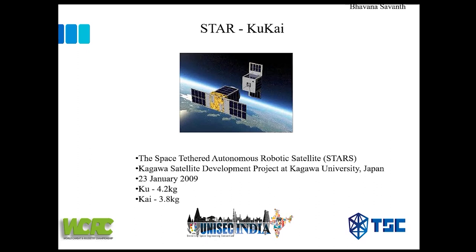STAR — the Space Tethered Autonomous Robotic Satellite — is a Kagawa Satellite Development Project at Kagawa University, Japan, launched on 23rd January 2009 as a secondary payload on H-2A. It consists of two subsatellites: Ku, the mother, and Kai, the daughter, tethered by a 5-meter tether. The mother extended its arms to the daughter, and the daughter was intended to take images and understand the attitude of the mother — hence the name Kukai.